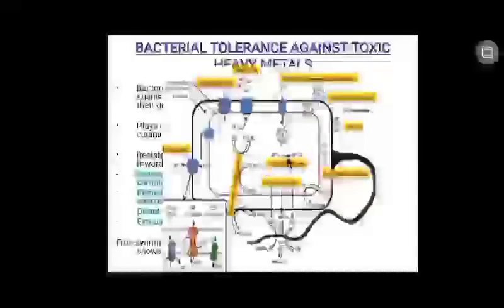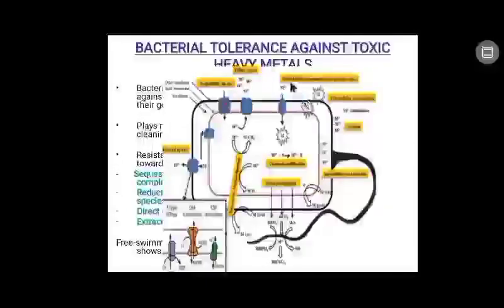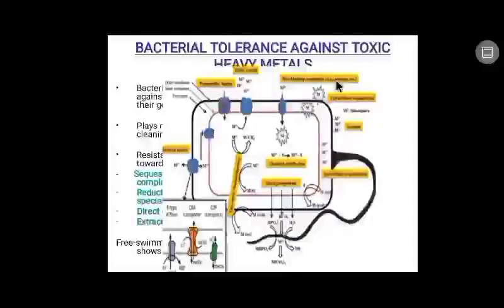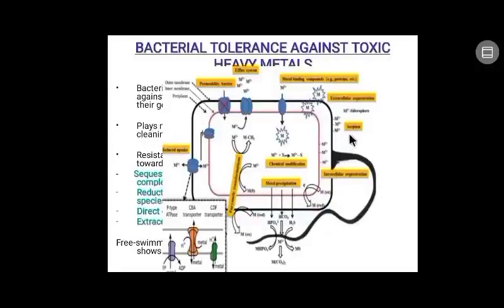This figure represents different mechanisms of bacteria towards toxic heavy metals. Metal-binding components like proteins sequester metal ions; extracellular sequestration also resists heavy metals; sorption; intracellular sequestration; chemical modification to less toxic species of metal ions; metal precipitation; enzyme transformation; reduced uptake of heavy metal toxicants; and permeability barrier towards toxic heavy metals.